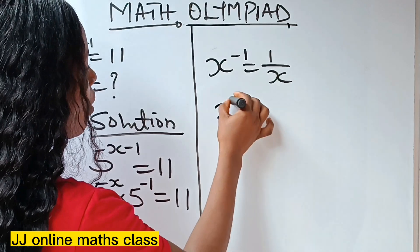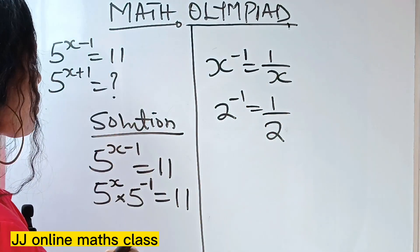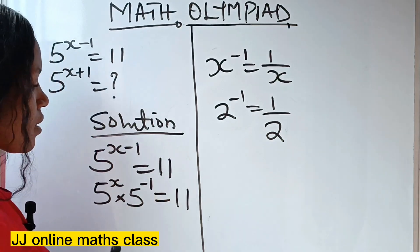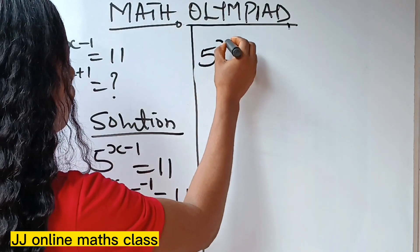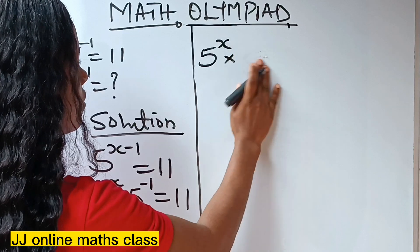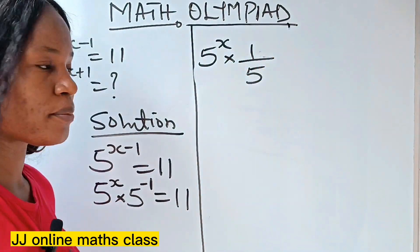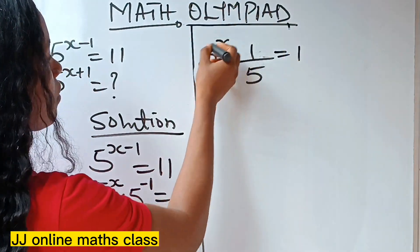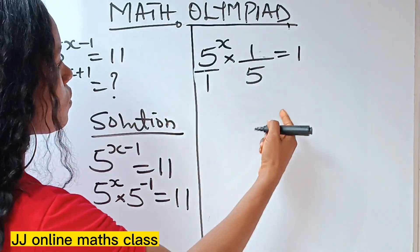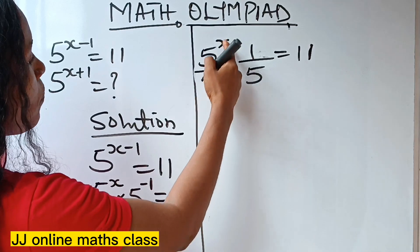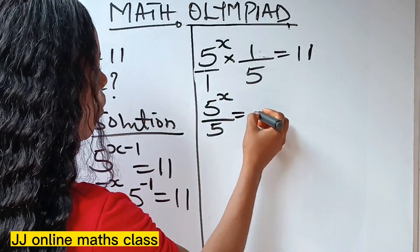There is another law of indices: x to the power of minus 1 is the same thing as 1 over x. So 2 to the power of minus 1 is the same as 1 over 2. Applying that here, we can rewrite this as 5 to the power of x times 1 over 5 — because the minus 1 becomes 1 over — equals 11. Since 5 to the power of x is 5 to the power of x over 1, solving this side gives us 5 to the power of x over 5, equal to 11.